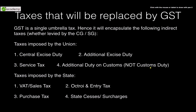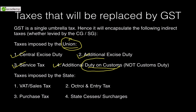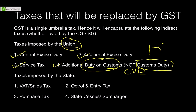The taxes that will be subsumed when GST is implemented: taxes imposed by the union government include central excise duty, additional excise duty, service tax, and additional duty on customs also known as CVD — countervailing duty. All these duties will be subsumed, except for customs duty, which is levied on any kind of import or export. Customs duty will continue to exist even after implementation of GST. All other duties mentioned will be subsumed.